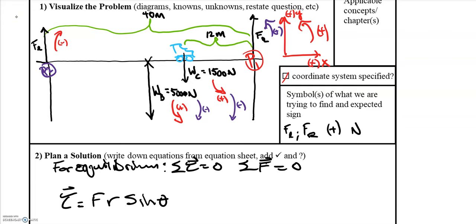In rotational equilibrium, the sum of the torques must be zero because a torque tends to cause an object to rotate. If the system is not accelerating, the sum of the forces must also be zero. The torque equals the force times the distance from the pivot point times the sine of the angle between those two vectors.